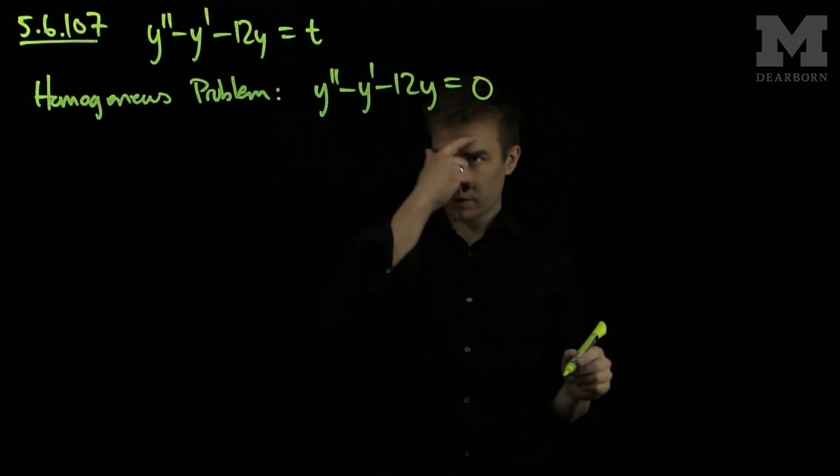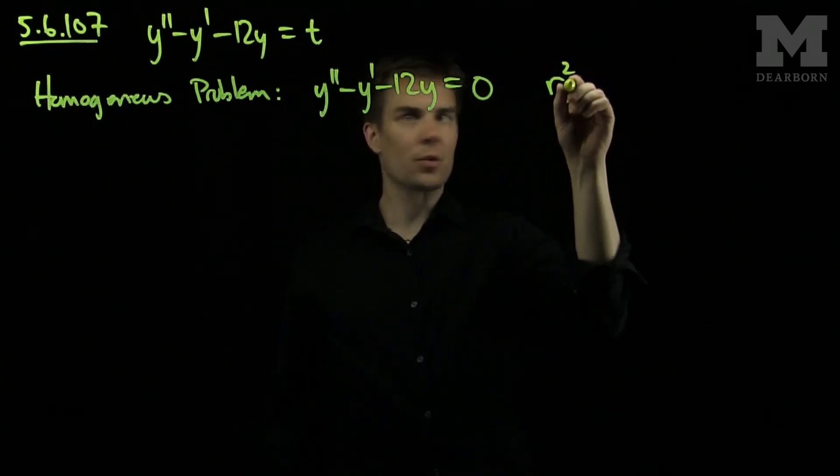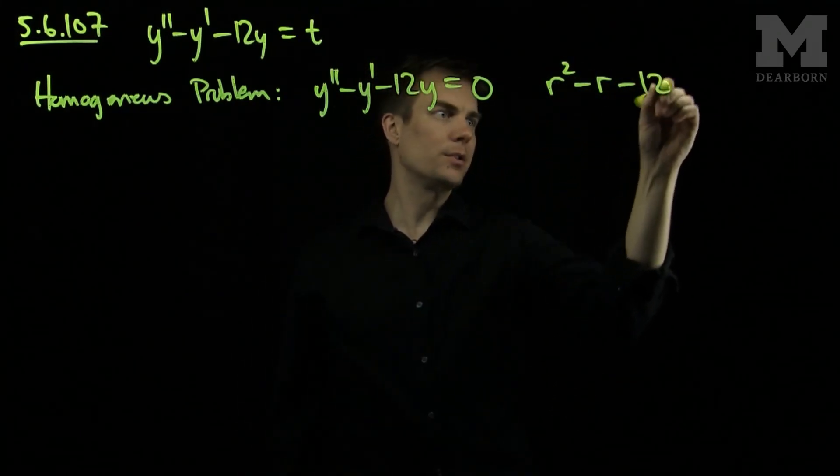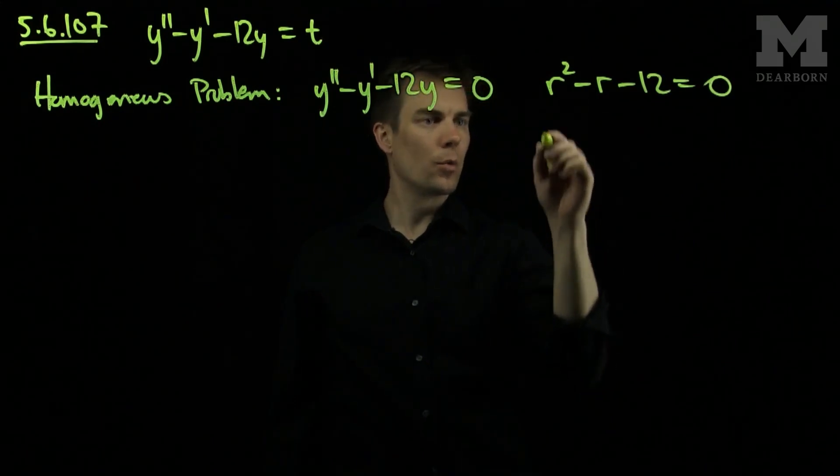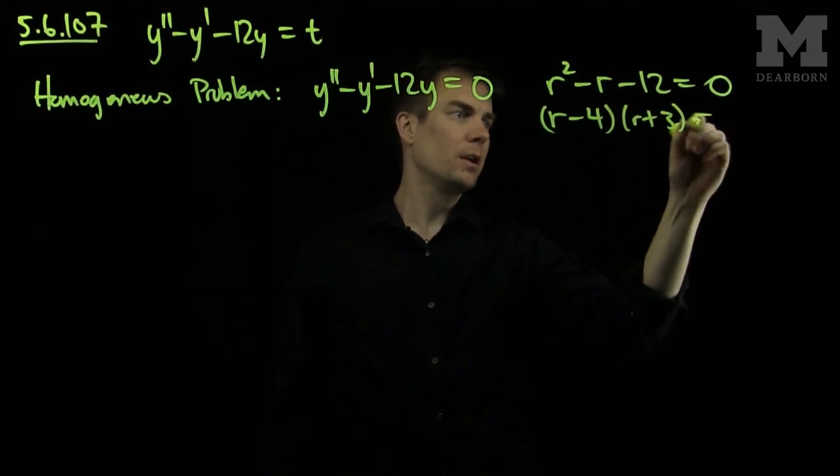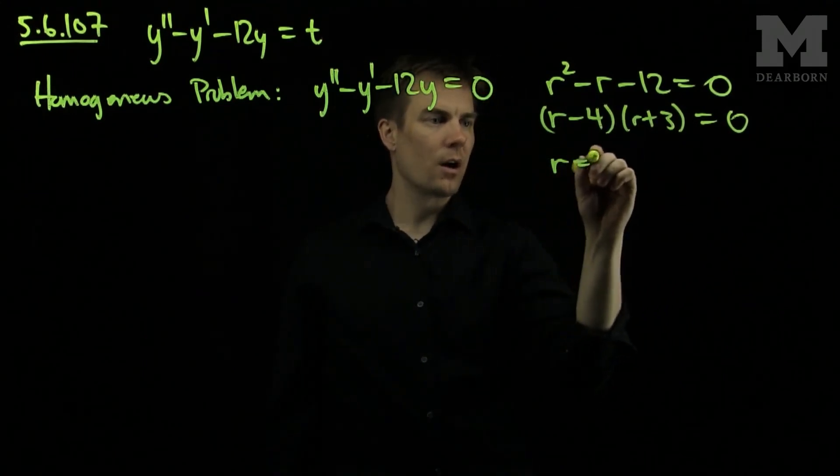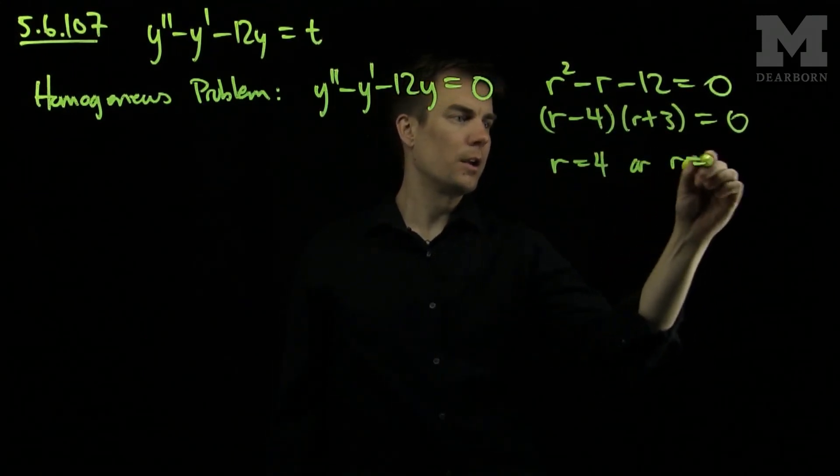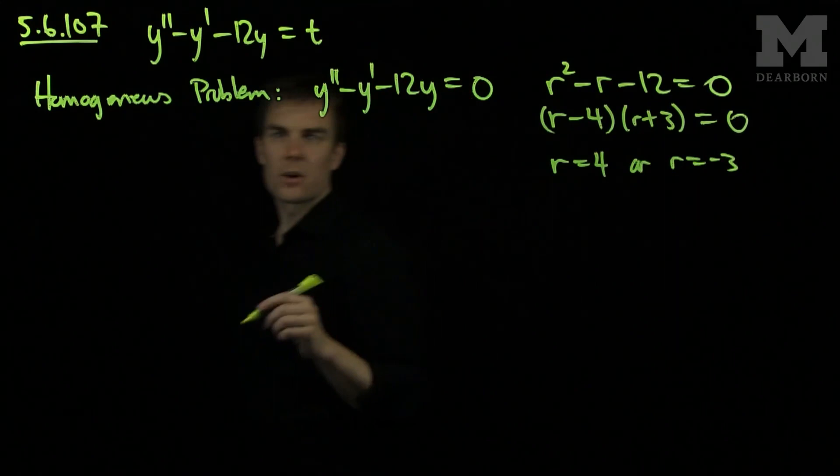The characteristic equation of this problem is r squared minus r minus 12 equals zero, which we can factor as r minus 4, r plus 3 equals zero. So we have r equals 4 or r equals negative 3, and we've solved our homogeneous problem.